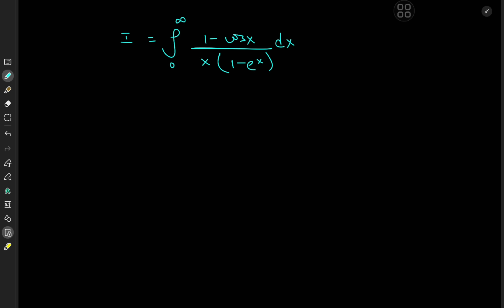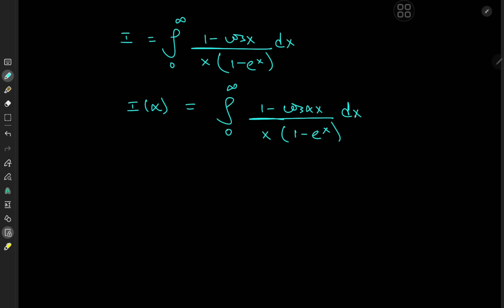So today we have the integral from 0 to infinity of (1 minus cosine of x) over x times (1 minus e to the x) dx. And this looks like the perfect integral to solve using Feynman's trick. So we'll first define the integral function I(α) as the integral from 0 to infinity of (1 minus cosine(αx)) over x times (1 minus e to the x) dx.